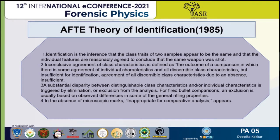For fired bullet comparison, exclusion is usually based on observed differences in the general rifling properties of that bullet. Fourth, in the absence of microscopic marks, the sample is inappropriate for comparative analysis. These were the four main points used by the Association of Firearms and Toolmarks Examiners for identification.